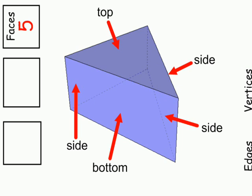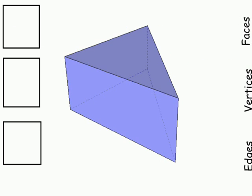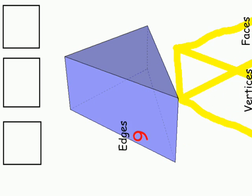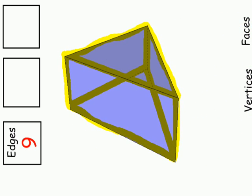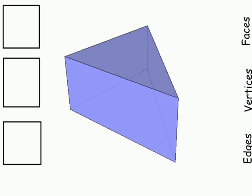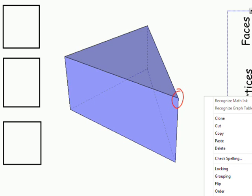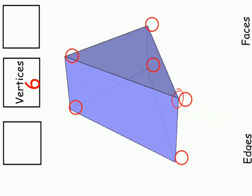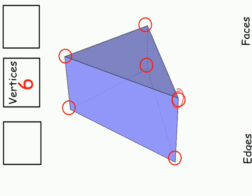Let's do edges next. See if you can count how many edges there are on this triangular prism. We've got three on the top. There are actually nine edges on this triangular prism. What about vertices? The vertices are where three edges meet. See if you can count how many vertices there are. If you said there are six, you are correct — there are six vertices in this triangular prism.